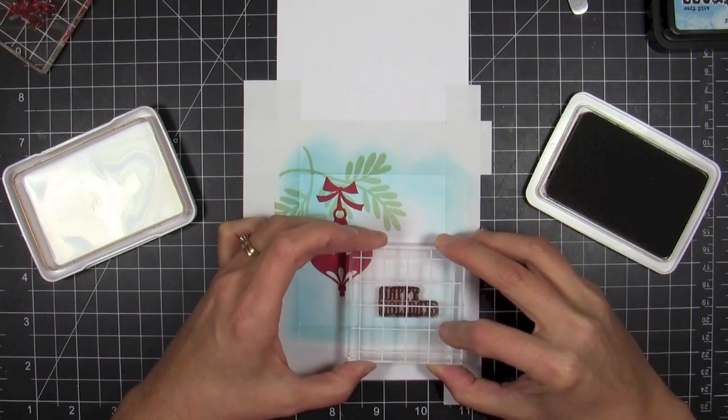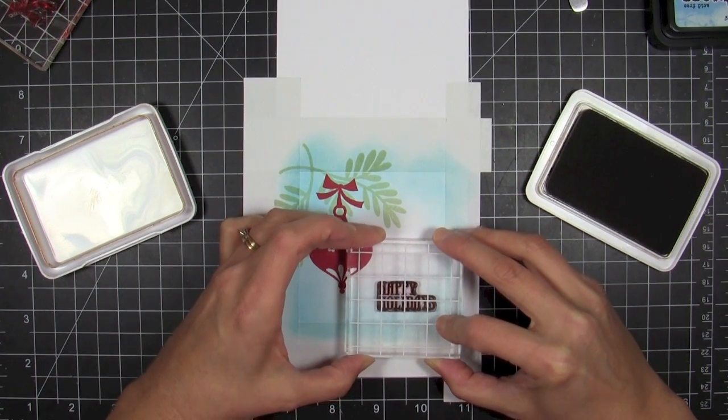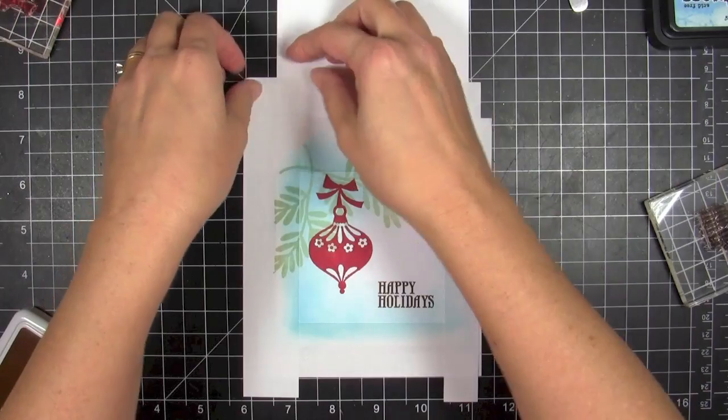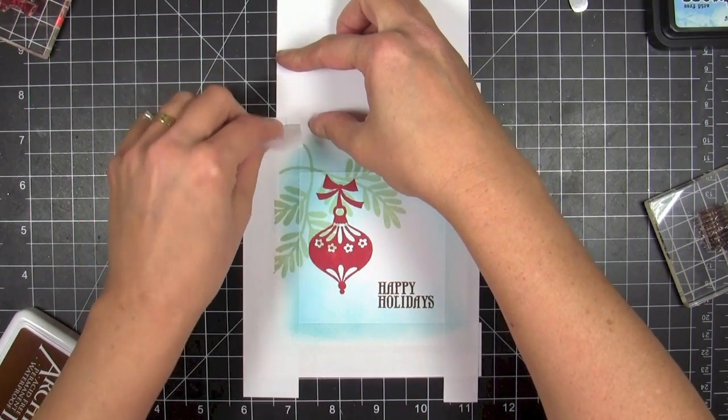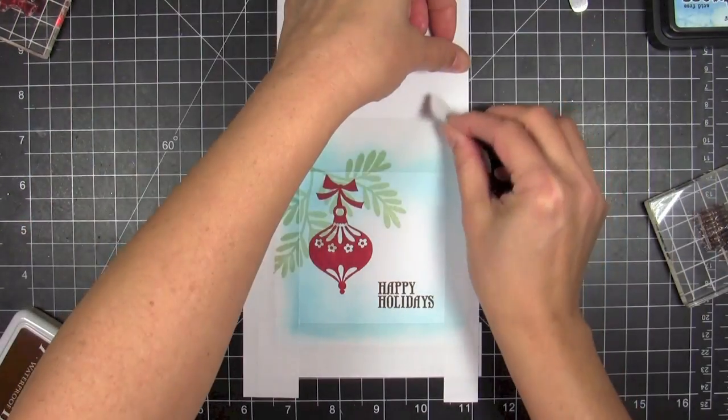Once we're done with that, we can stamp the greeting with Memories Artprint Brown down there in the corner. I think this color combination is really fun—it's not quite earthy, but it's very cozy to me. I really love this combination.